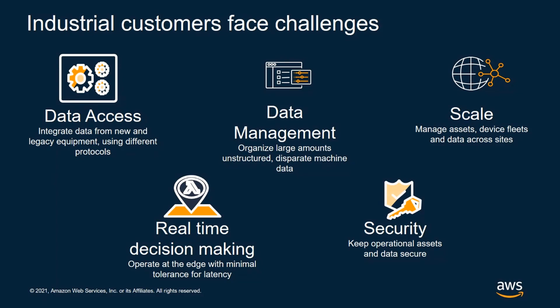The second challenge is data management, where it becomes very difficult to organize the large amount of data being generated by industrial equipment. That makes it very difficult for data scientists to extract and analyze data they can use to predict any equipment failure. The third challenge is the scaling part — most industrial customers have multiple plants, and those plants may have multiple production lines and multiple pieces of equipment, making it very difficult to scale up and ingest data from all sites and thousands of assets within the fleet.